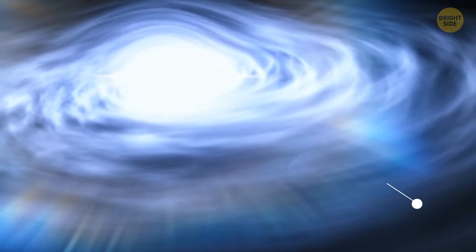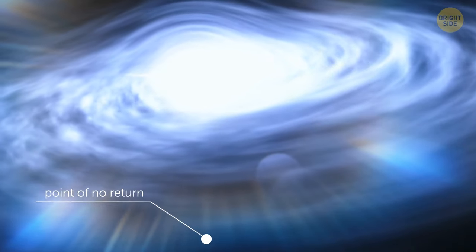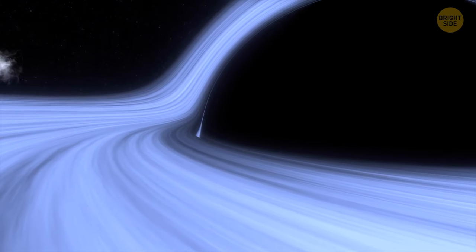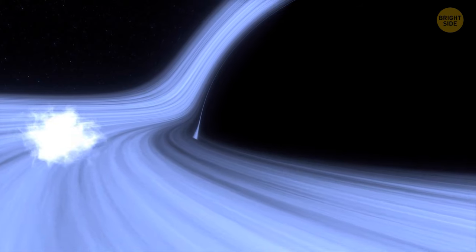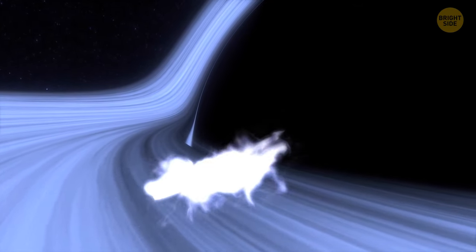Why such a name? The thing is that the event horizon is a point of no return on the outskirts of a black hole. When something, for example, matter, radiation, or light, reaches this boundary, there is no way for it to escape the black hole's clutches.